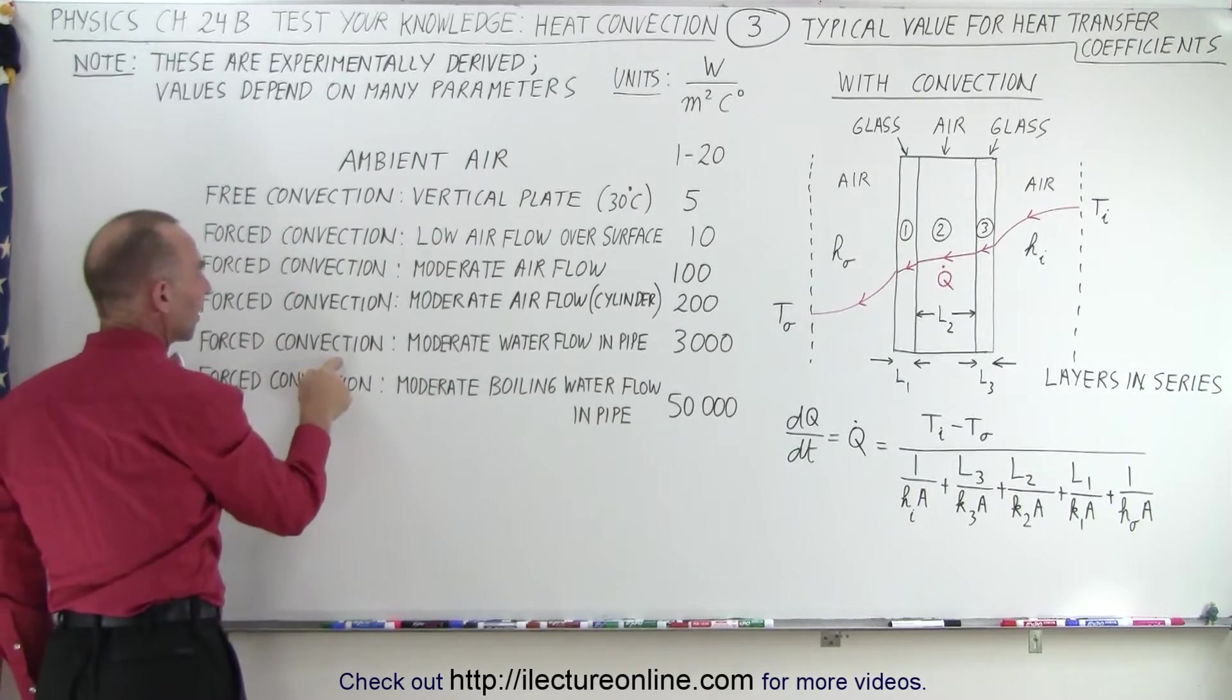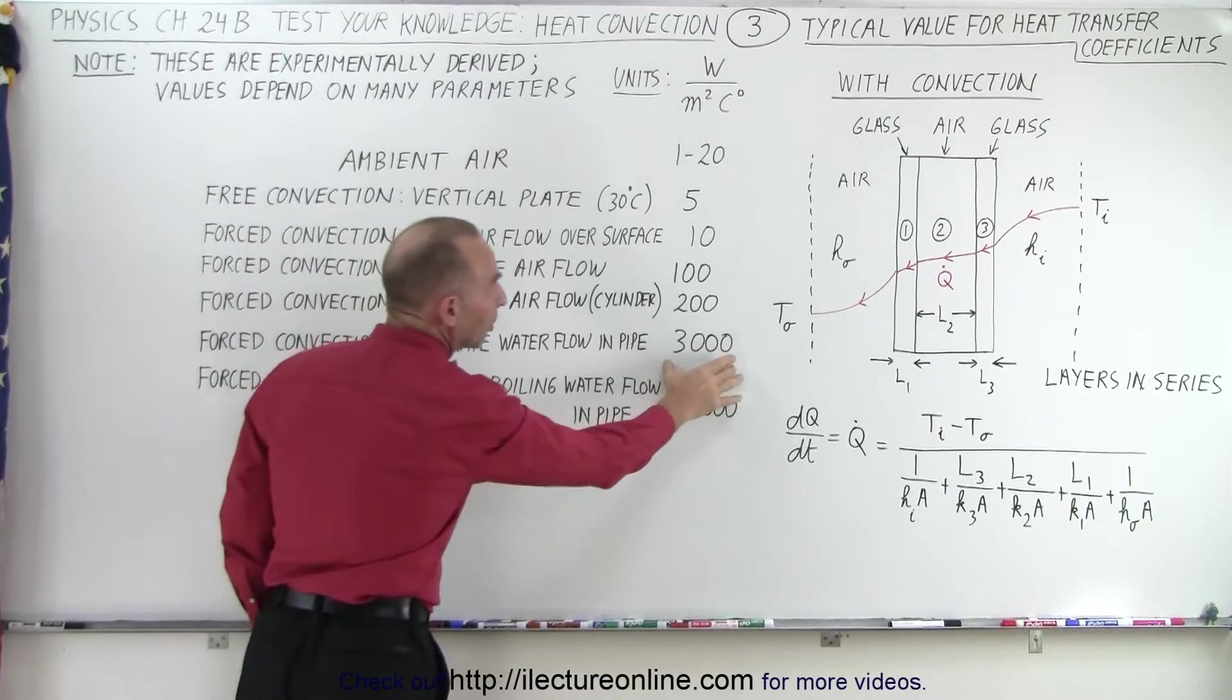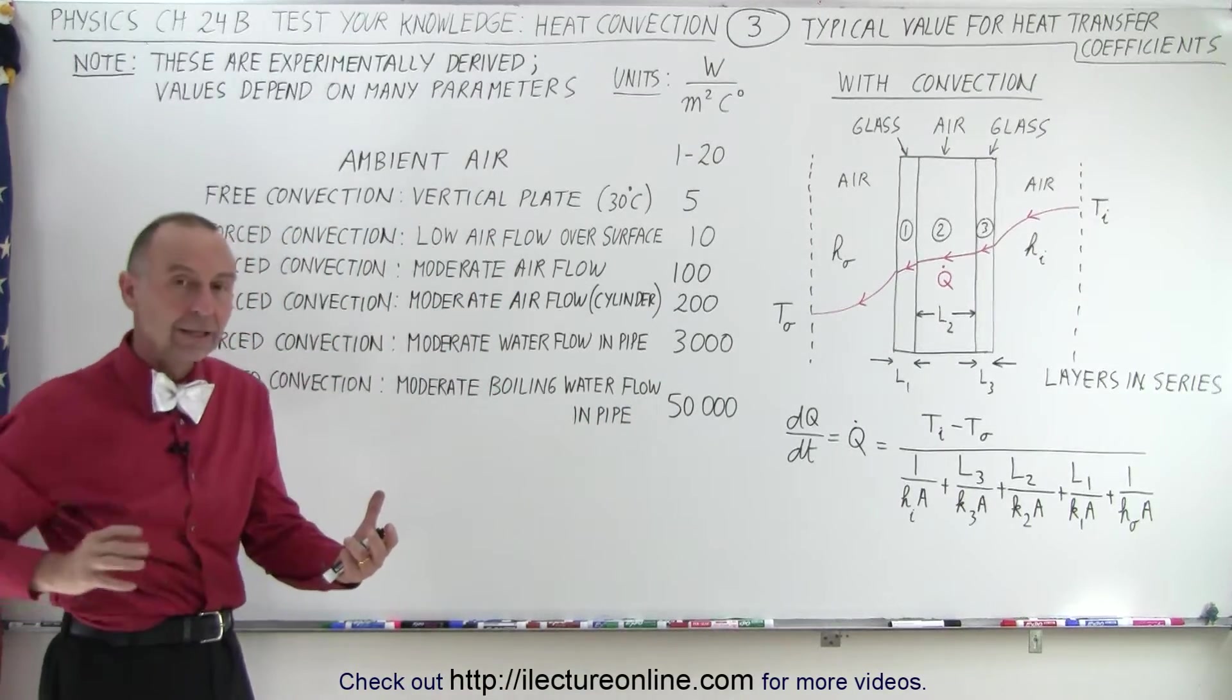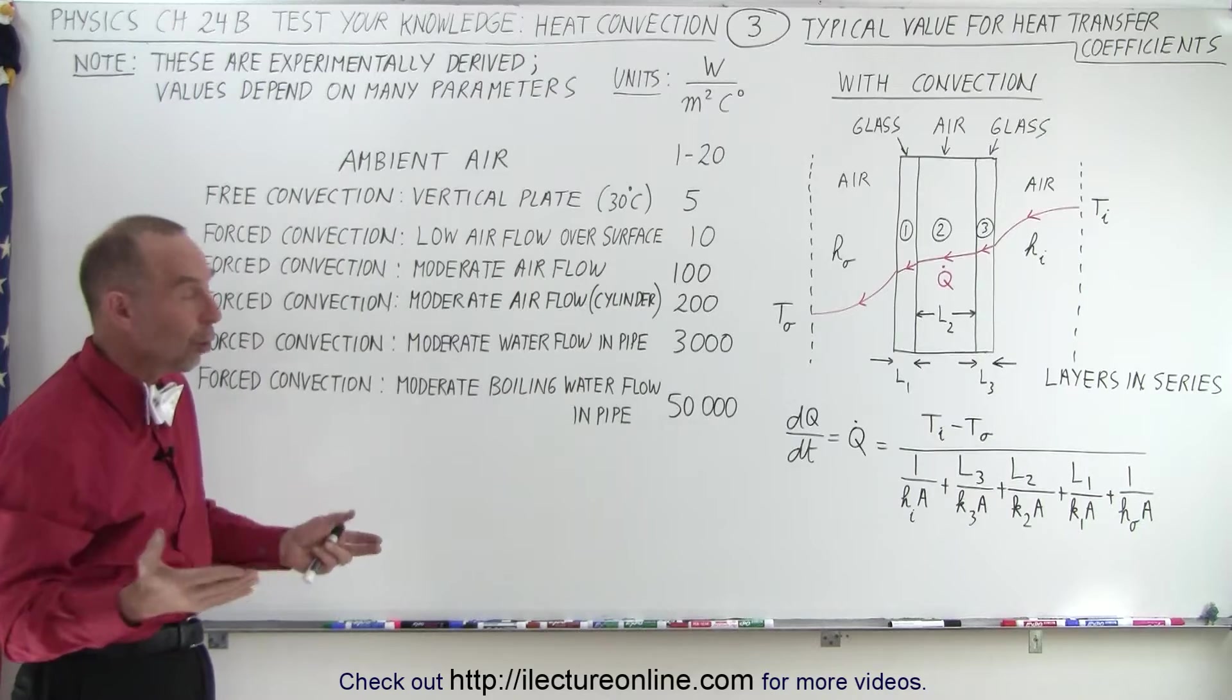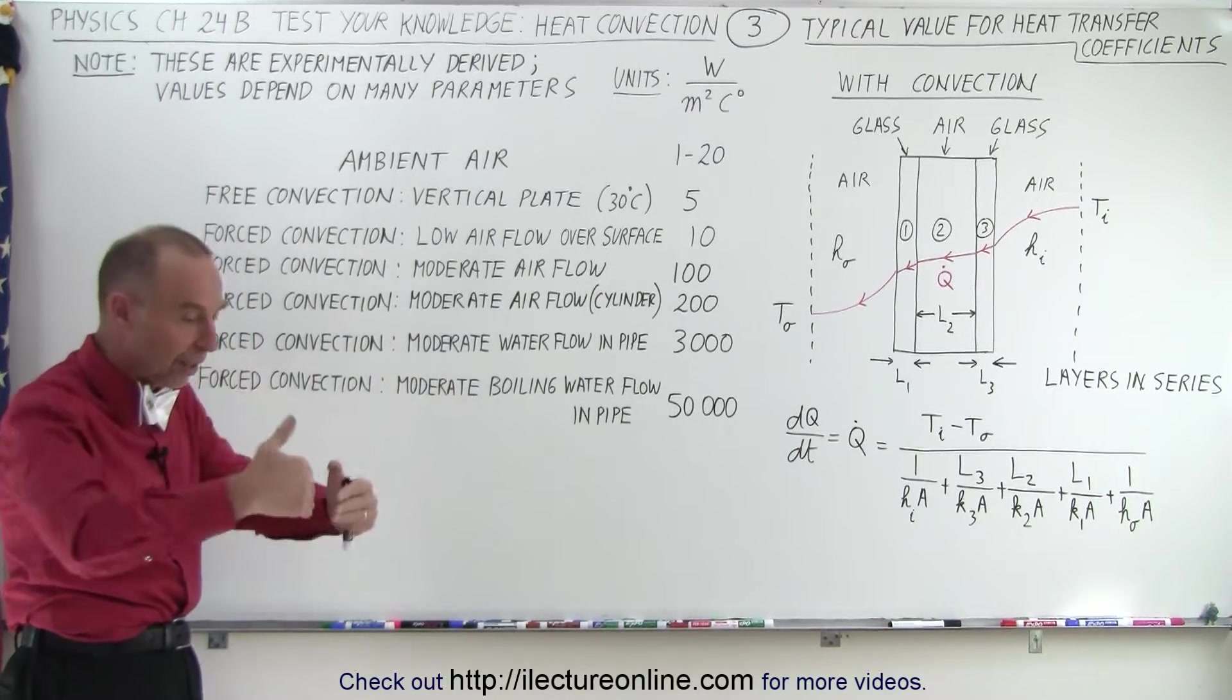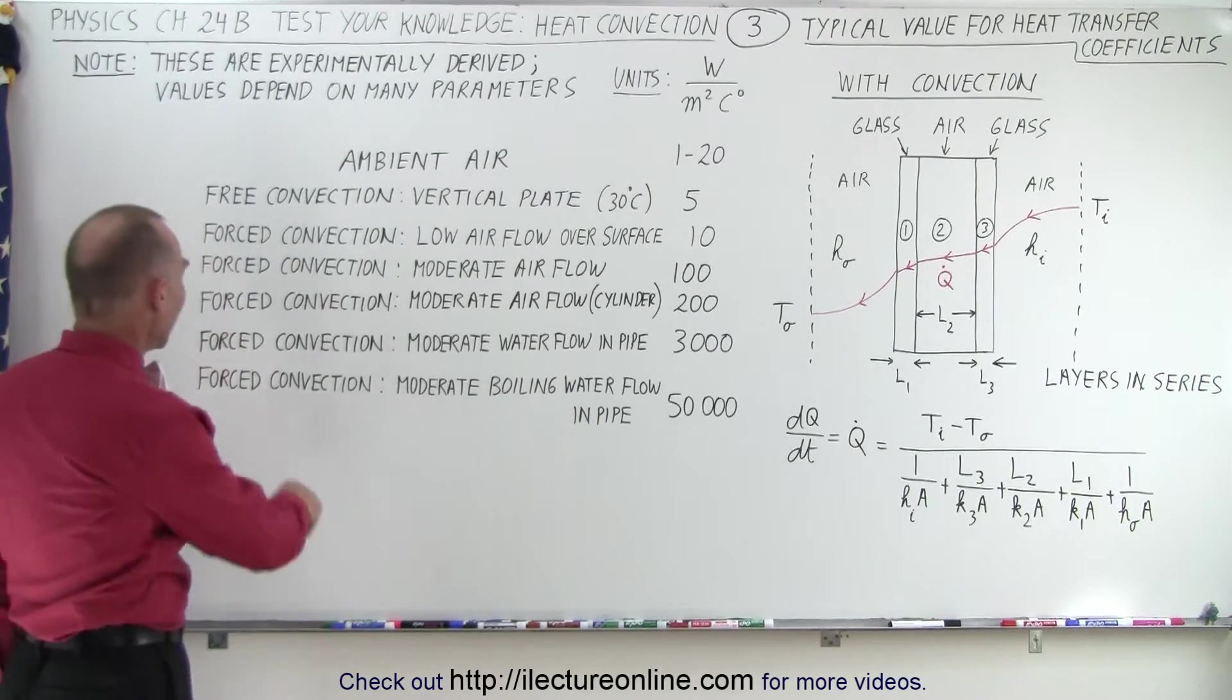Now if we talk about forced convection of moderate water flow in a pipe, it goes all the way up to 3,000. So when you want to cool things down and you flow a hot liquid or a warm liquid through a pipe, it will give off a lot of temperature to the pipe itself. Or if it's hot outside and you have water flow inside the pipe, a lot of heat will go into the pipe. Not temperature, of course, but heat.